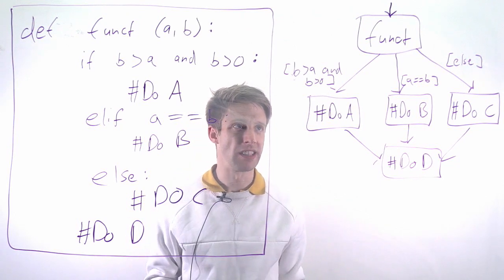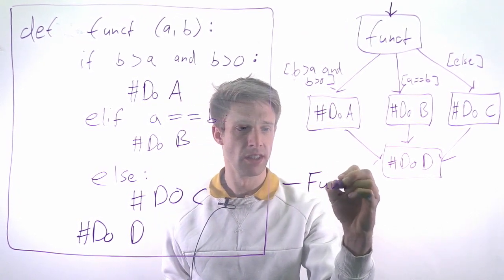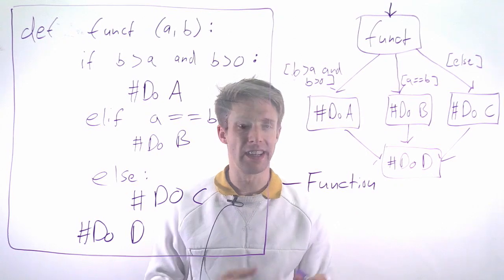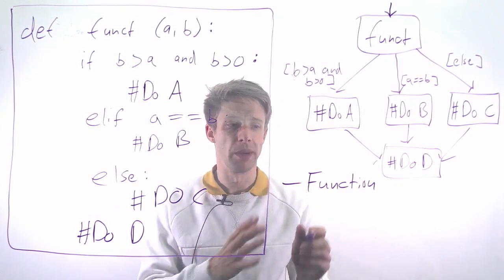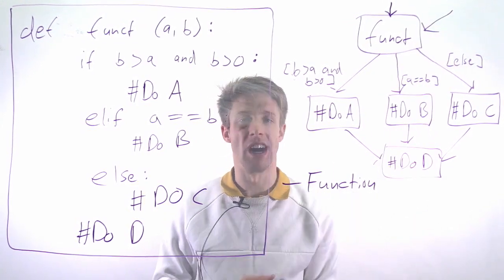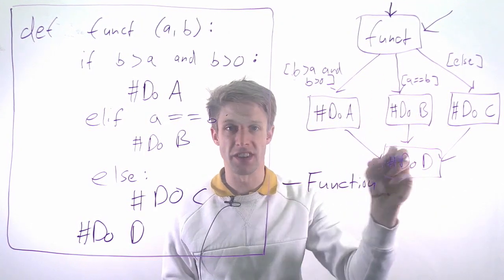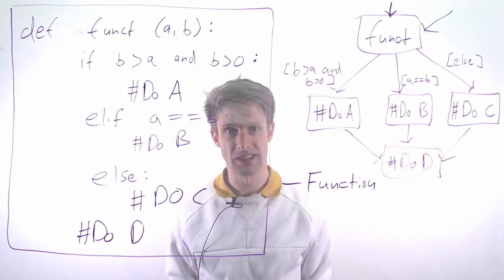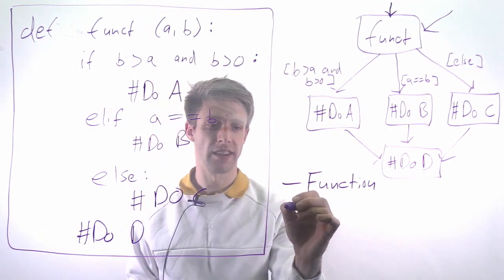As the most simple one, we have something called function coverage. That's basically if each and every function is executed at least once, we have 100% coverage. It looks at whether we're executing the function. It doesn't care what exactly happens in the function, as long as it's executed. That's a very basic measure, but it's a start.